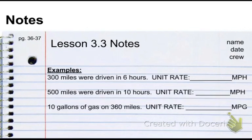So, here's some examples. 300 miles were driven in six hours. What is my unit rate in terms of miles per hour? Well, this is going to be easy. I take 300 because, again, miles comes first. And I divide miles by six because I want miles per hour. Number of miles divided by hours. And I end up getting 50 miles per hour. Not too fast.